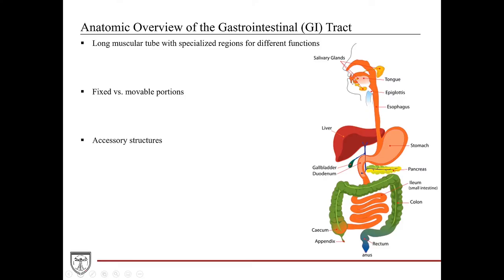Along the GI tract there are also some really important accessory structures such as the salivary glands, the liver, the gallbladder, as well as the pancreas. These provide critical functional elements such as producing saliva, which lubricates the food bolus and secretes amylase to start breaking down carbohydrates. The liver produces bile to emulsify fat, and the pancreas produces digestive enzymes that break down carbohydrates, fats, and proteins so that the cells of the small intestine can absorb these macromolecules. While they're called accessory structures, these might even be called critical structures.